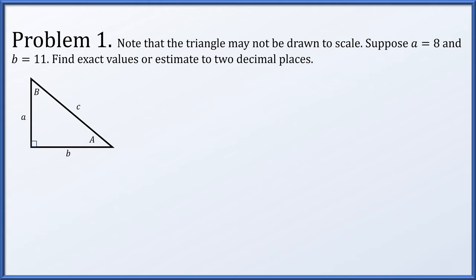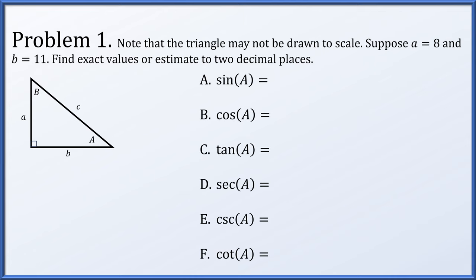The triangle may not be drawn to scale. Suppose that side length a is equal to 8 and side b is equal to 11. Find exact values or estimate to two decimal places. The sine, cosine, tangent, secant, cosecant, and cotangent of A.